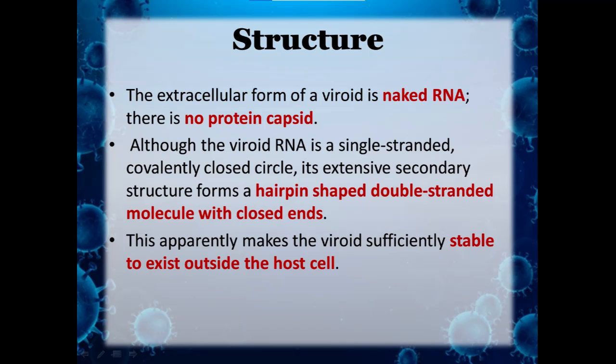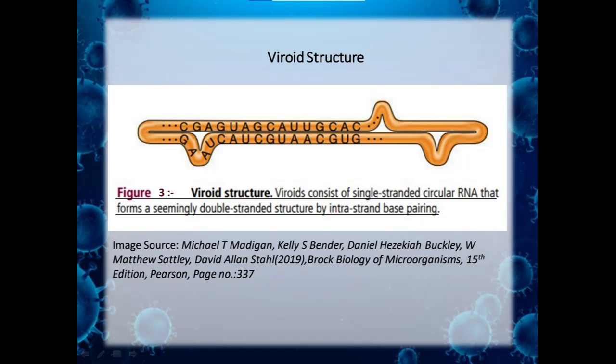The extracellular form of a viroid — outside a host cell — is a naked RNA with no protein capsid. Although the viroid RNA is a single-stranded covalently closed circle, its extensive secondary structure forms a hairpin-shaped double-stranded molecule with closed ends. This apparently makes the viroid sufficiently stable to exist outside the cell. The viroid structure consists of a single-stranded circular RNA that forms a seemingly double-stranded structure by intrastrand base pairing, but is actually a single-stranded molecule.